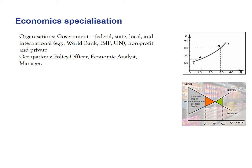When thinking about the economic specialization, a common question is: what type of job would I get? The types of jobs include policy officers, economic analysts, and research officers. Graduates work at state, federal and local governments, policy houses like the Productivity Commission, and international organizations such as the World Bank, the IMF, and the United Nations, as well as not-for-profit and private sectors. Some graduates have gone on to work as university researchers or complete a PhD.